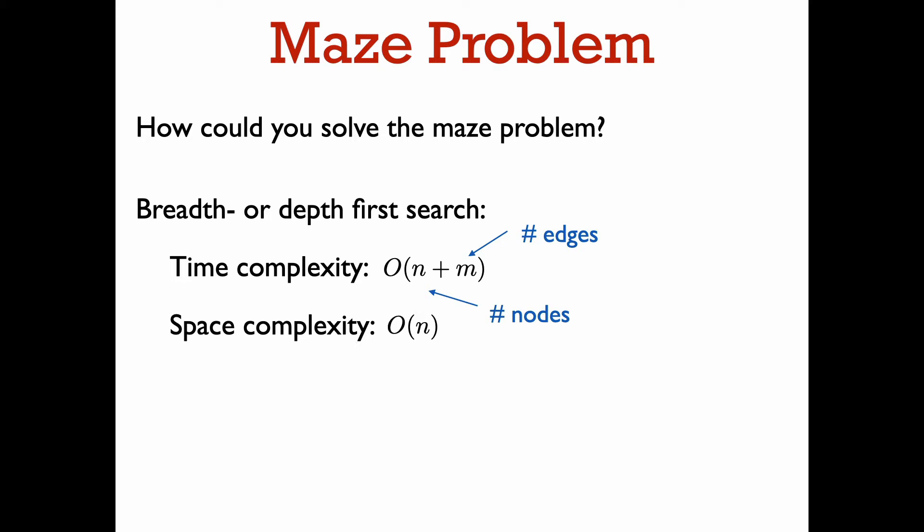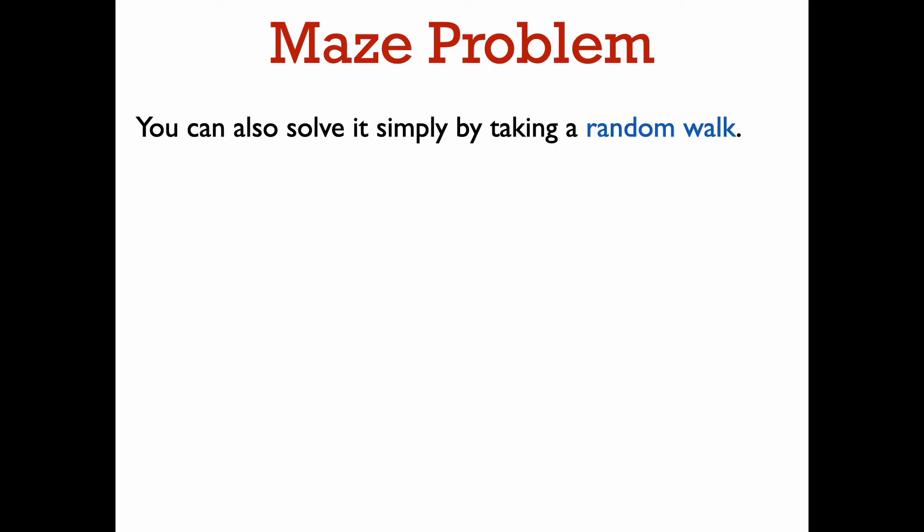So both of these algorithms are pretty good in terms of time complexity. But what if you want to find your way out of a maze and you have a terrible memory? What if you don't want to use so much space? Then you can just try walking randomly. In a random walk, when you are at a vertex, you choose uniformly at random which neighbor of that vertex to go to next. You can show that if a graph G has n vertices and m edges,